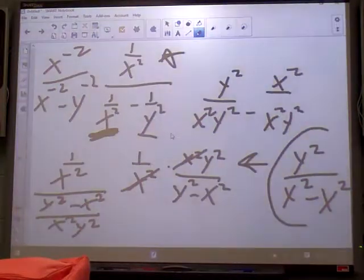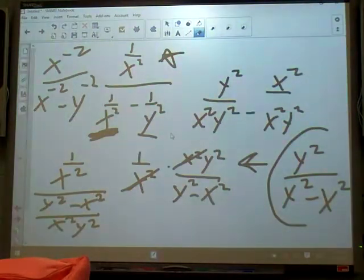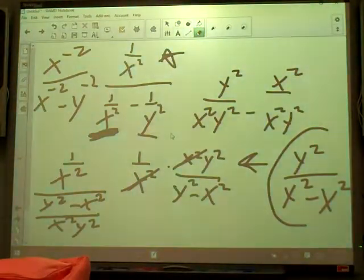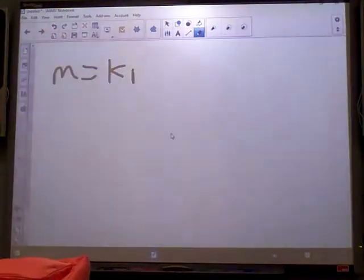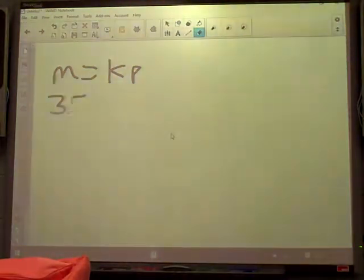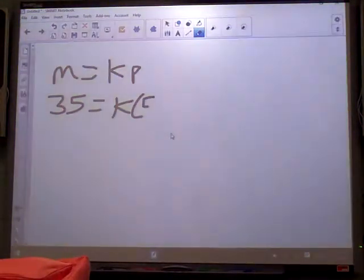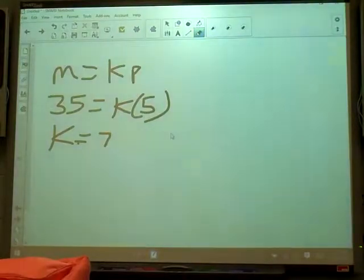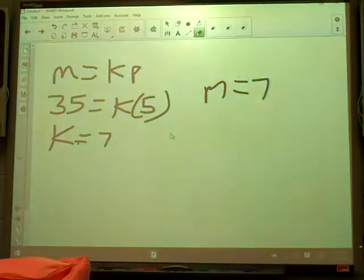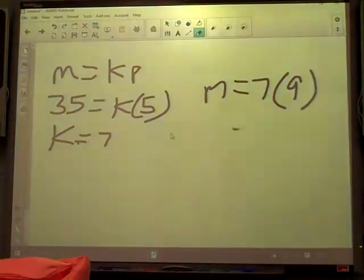Alright, so we have two more variations here on 14, 15. 14, m varies directly as p. That's easy, that's just directly as multiplication. So m varies directly as p. There's your equation, and it gives you some stuff. m is 35 when p is 5, so 35 equals k times 5 divided by 5, and you know your k is 7. Now, use that in your new info. Find m when p is 9. So m will equal k times p, which is 63.